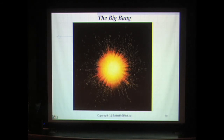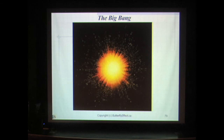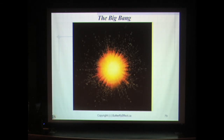Georges Lemaître proposed what became known as the Big Bang theory in 1927, although he referred to it as the primeval atom theory. According to this theory, around 15 billion years ago, a tremendous explosion occurred which started the expansion of the universe and the creation of all the matter that makes up all the stars and galaxies that we observe. This is the standard model and most commonly accepted theory of the creation of our universe. Fred Hoyle is credited with coining the term Big Bang during one of his radio broadcasts in 1949.